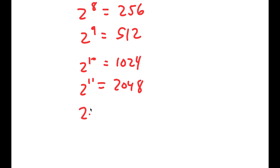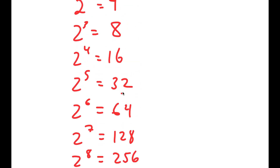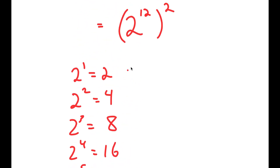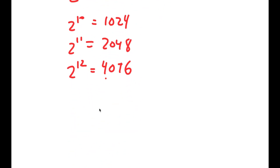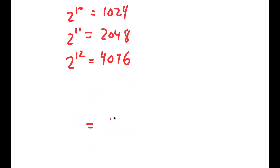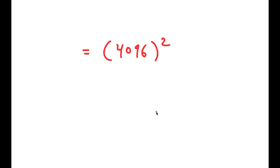I keep on doubling until I reach 2 to the power of 12, which is equal to 4096. So this is my value for 2 to the power of 12. So now 2 to the power of 24 equals 4096 squared, and 4096 squared is the same thing as 4096 times 4096.